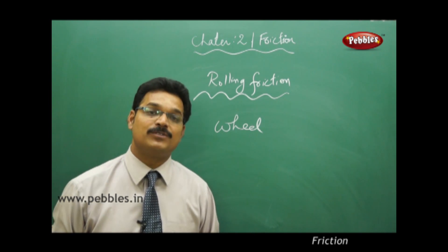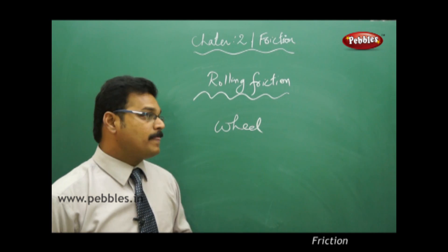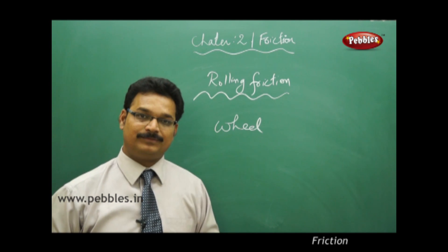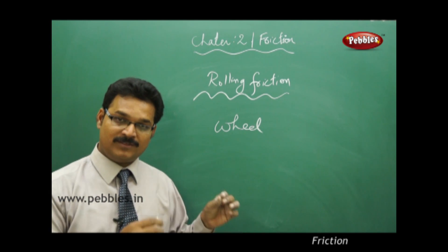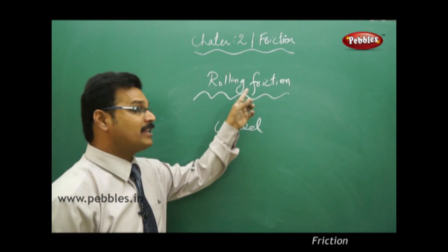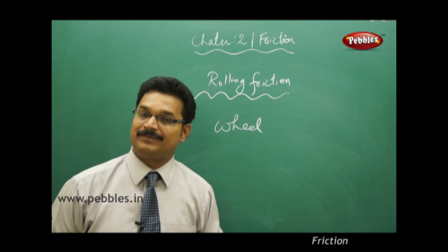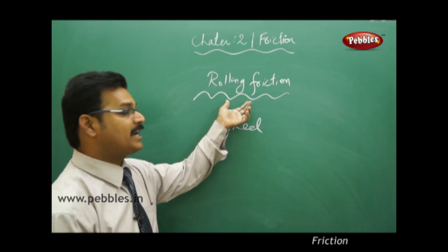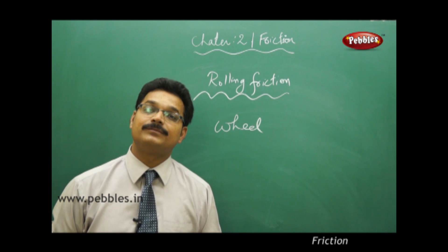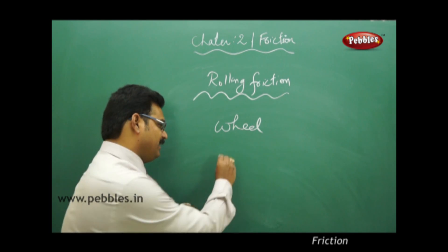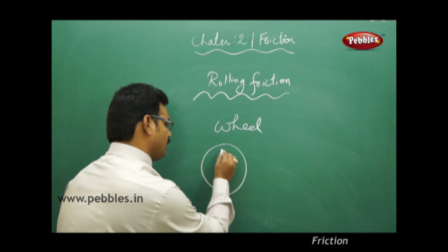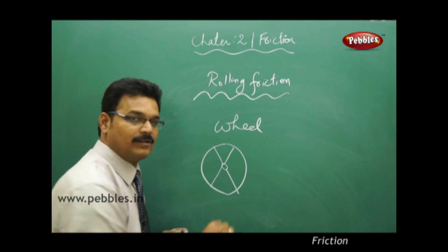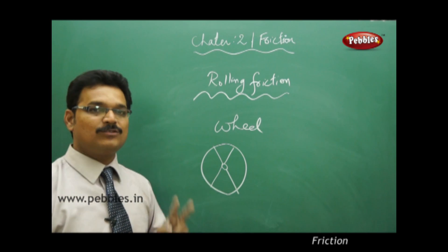Now, how are wheels actually rotating on the road? They rotate on the road with stability because of another type of friction called rolling friction. Earlier we discussed static friction and sliding friction. Rolling friction is a special category of friction. Whenever the wheel is moving on the road, there are two possibilities: it can rotate or it can slide. What is the difference between rotation and sliding?